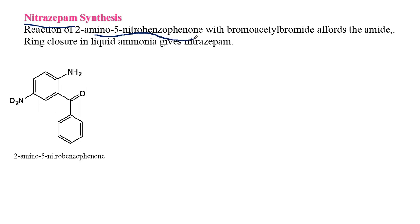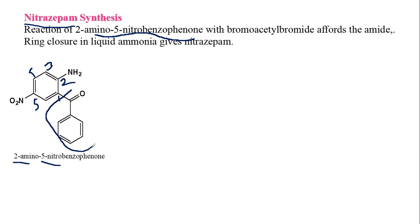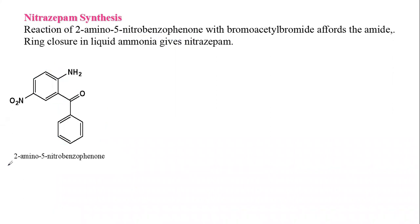Let's correlate the name 2-amino-5-nitrobenzophenone with the structure. Starting the numbering: position 1, 2, 3, 4, 5 — the amino group is at position 2, the nitro group is at position 5, and this moiety is benzene plus ketone, which gives benzophenone. So this is the structure of the first reactant, 2-amino-5-nitrobenzophenone.